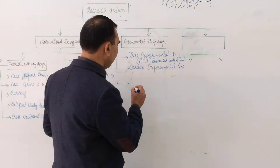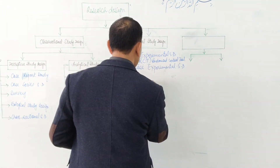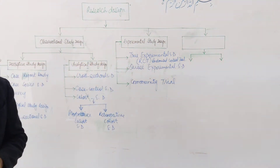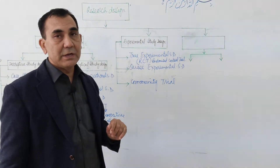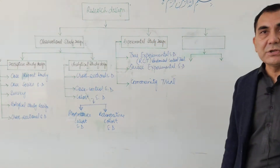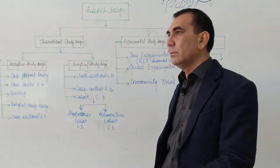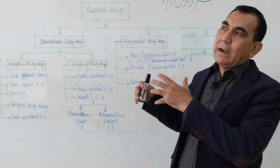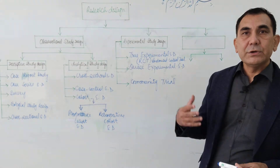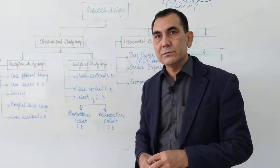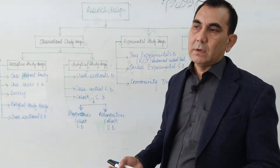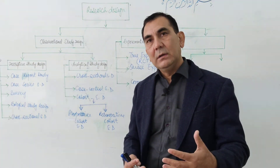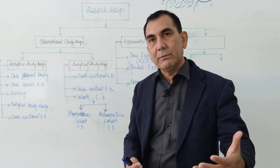The third type of experimental study design is called the community trial. In this design, the researcher or public health specialist conducts any activity or intervention at the community level. For example, giving training on ORT to rural women on how to make ORS at the home level to treat children and prevent dehydration.